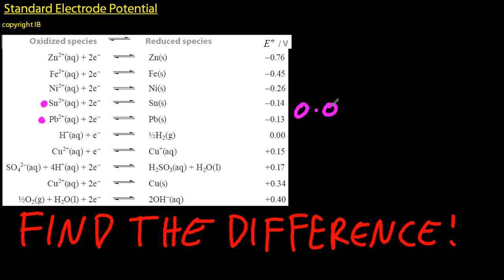Let's look at tin and lead. The difference is 0.01 volts if it's spontaneous, and it's minus 0.01 volts if it's non-spontaneous.